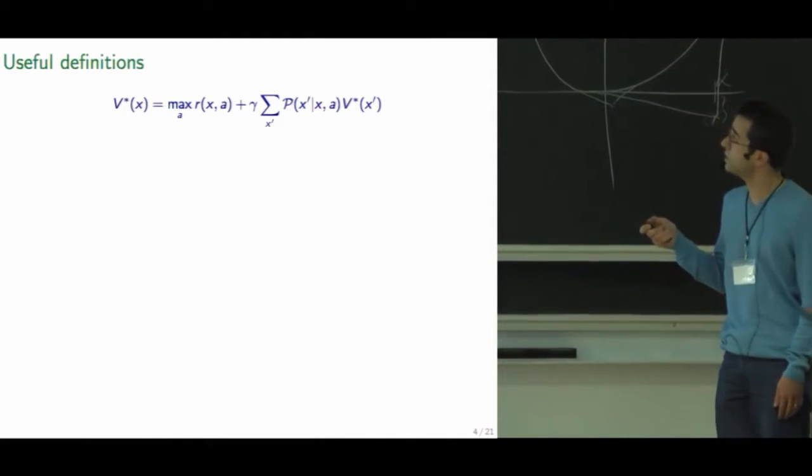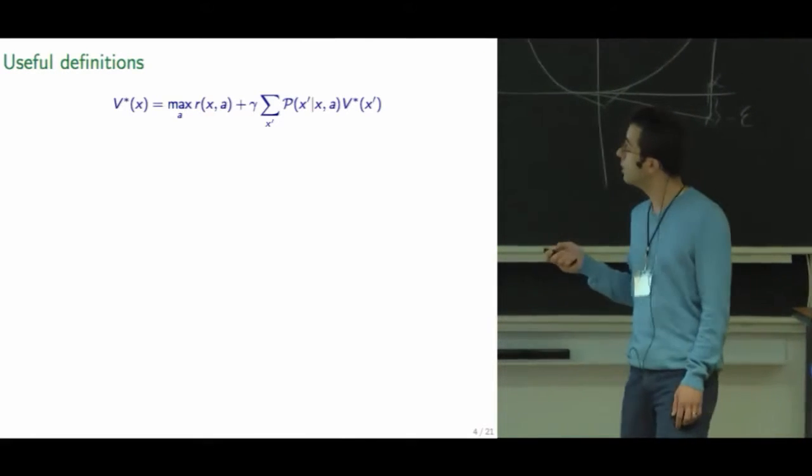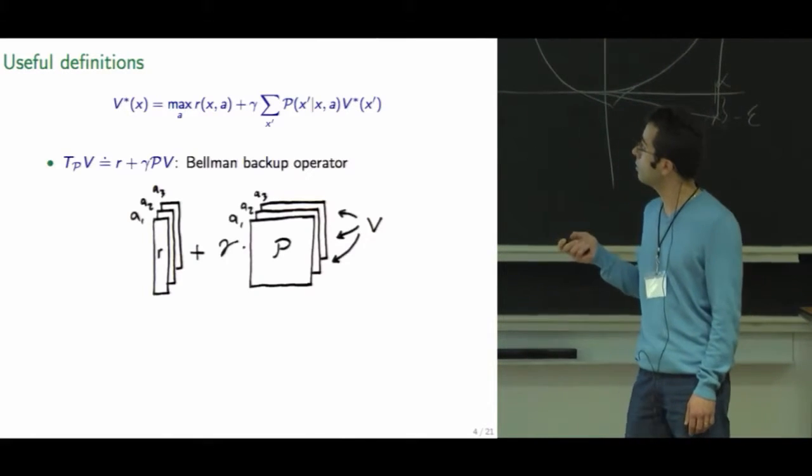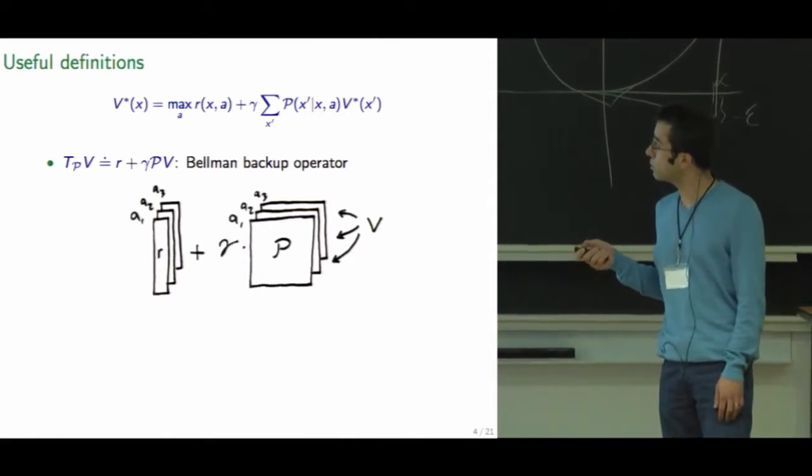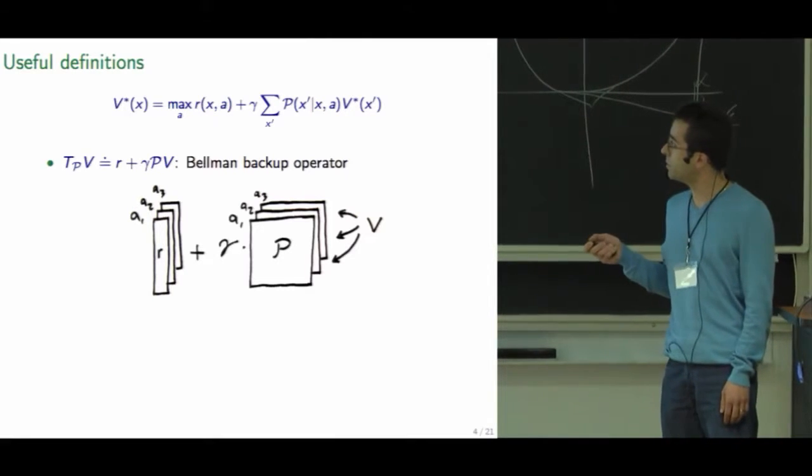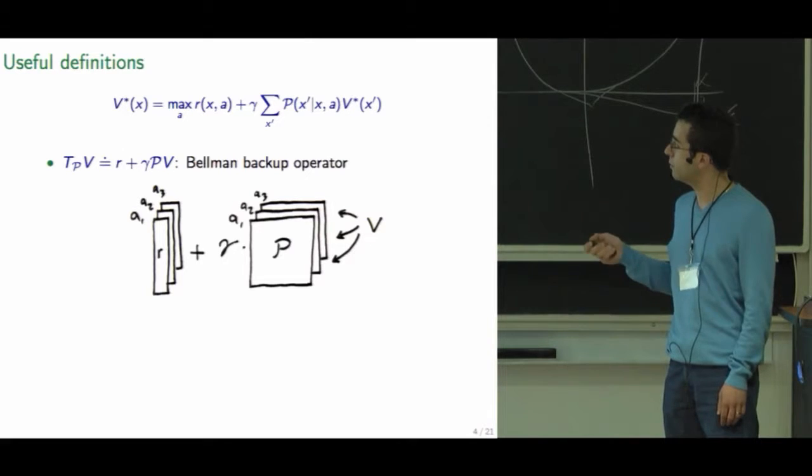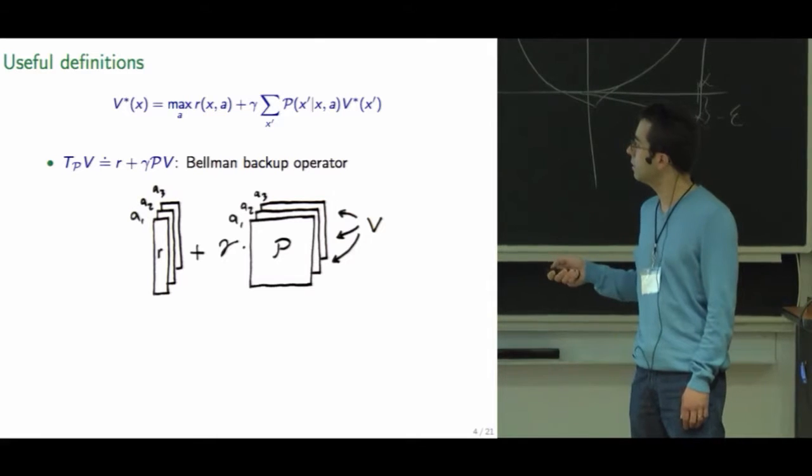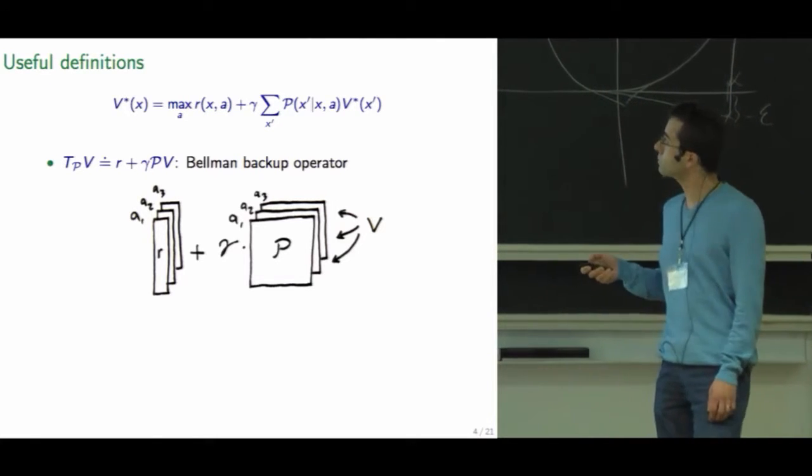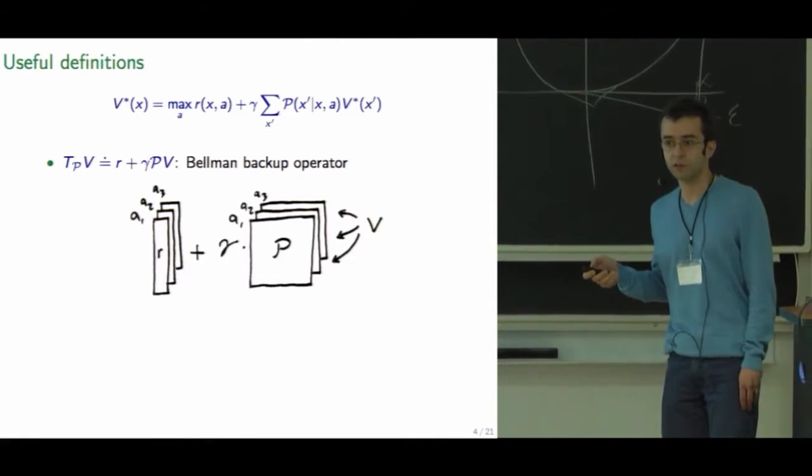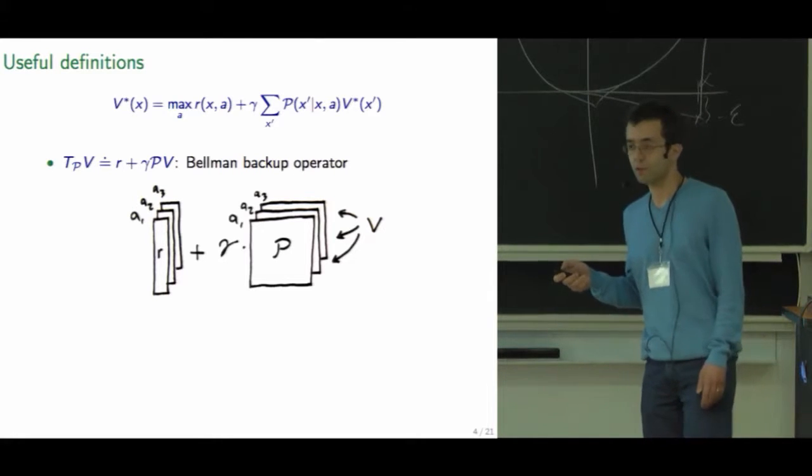So I want to write this concisely. It will be useful for us to discuss these things in terms of operators. So I'll define this operator T_P, which simply takes the immediate reward and adds the expected value of the next state. P is just this linear transition probability kernel of our MDP.